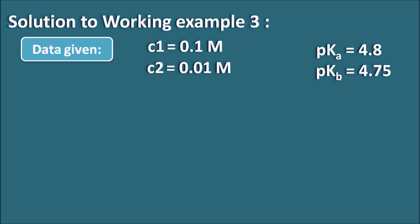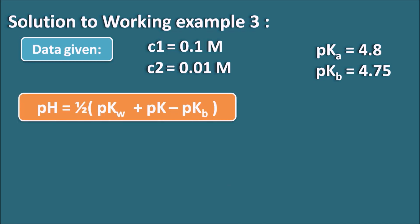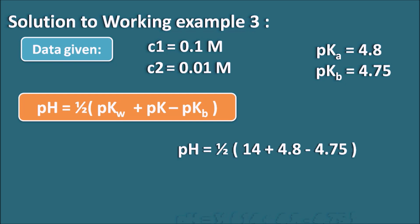Ammonium acetate is obtained from acetic acid (weak acid) and ammonia (weak base), so we use: pH = ½(pK_w + pK_a − pK_b). Applying this: pH = ½(14 + 4.8 − 4.75) = ½(14.05) = 7.03. The pH is 7.03 irrespective of concentration — whether the concentration is 0.1 M or 0.01 M, the pH remains the same, because for a salt of weak acid and weak base, pH is independent of concentration.